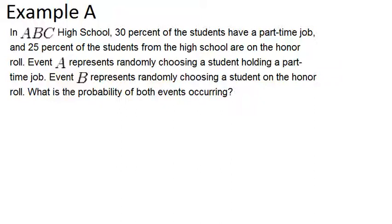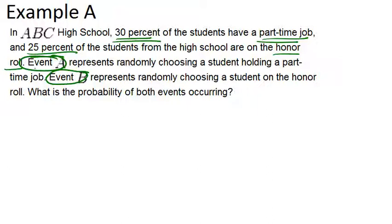In this problem we have two different events — about part-time jobs and honor rolls — and we're given two probabilities: a 30% chance of having a part-time job and a 25% chance of being on the honor roll. In order to answer this problem we actually have to assume that these two events are independent, otherwise there's no way to get an answer. So we'll assume the two events are independent, and in that case we can use the multiplication rule.